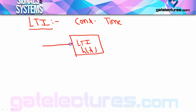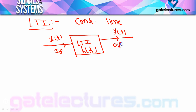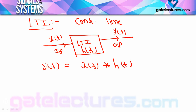We are focusing on convolution here. The input to the system is X(t), the system is represented by H(t), and the output of the system is Y(t). This is basically your LTI system. Now, for any LTI system, the output or response is the input convolved with the system — that is, X(t) convolved with H(t).